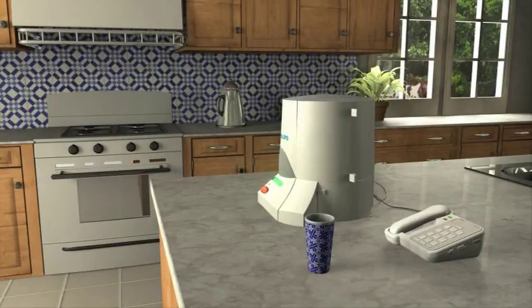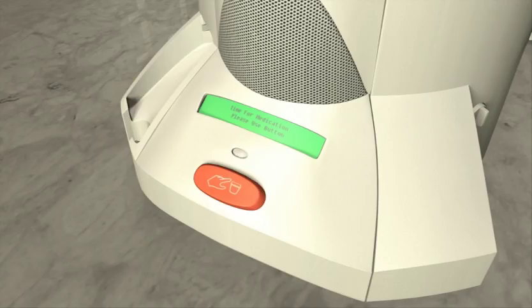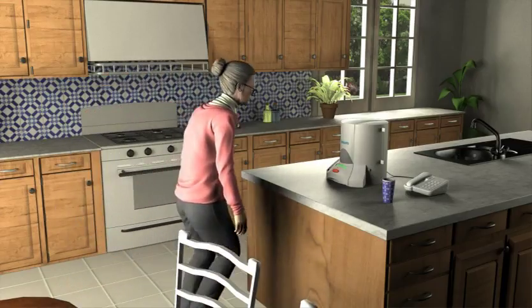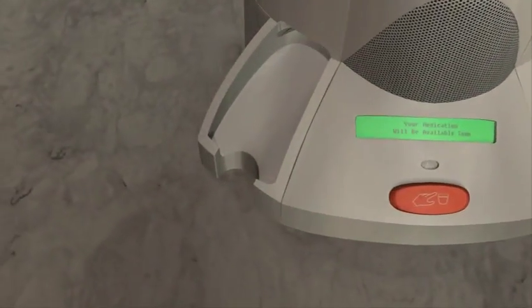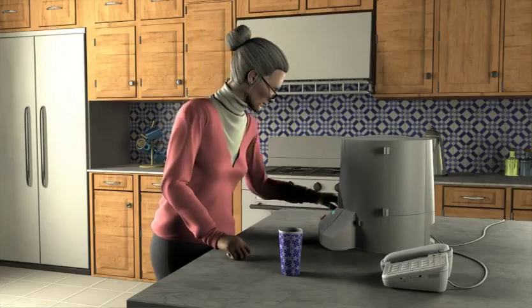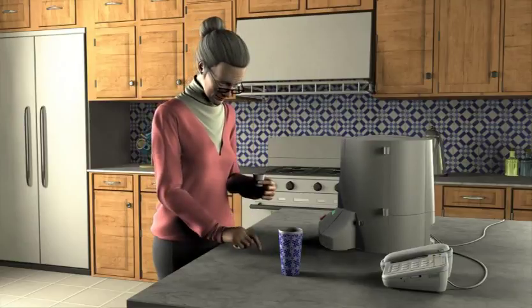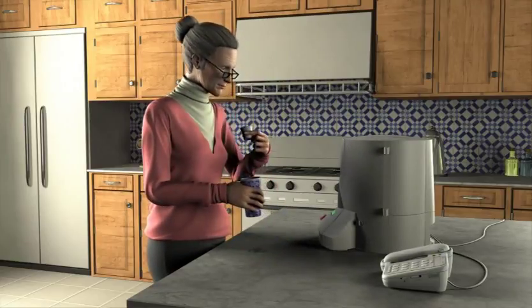When a scheduled dose is required, the dispenser button flashes on and off, and the medication dispenser sounds a vocal alert. Time for your medication. Press button to dispense. All the patient needs to do is press the button and the dosing cup will drop. The patient simply picks up the cup, removes the cap, and takes the medication.